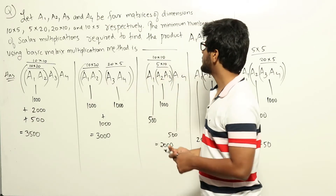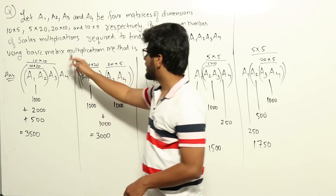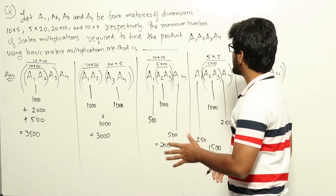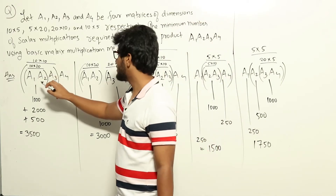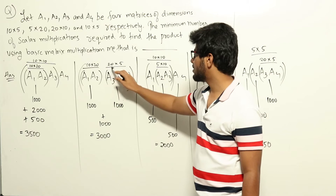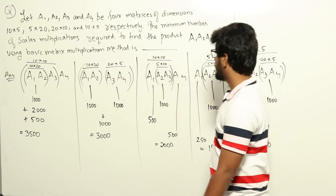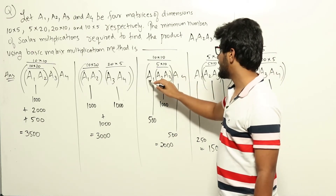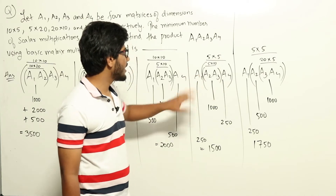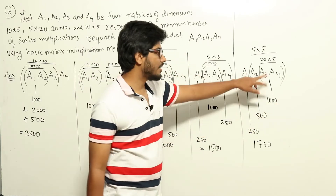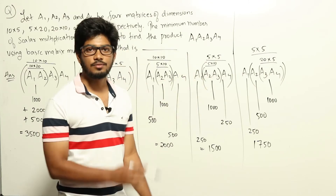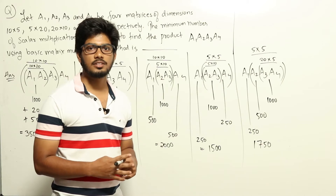Using this information, we will find which chain minimizes the number of scalar multiplications. There are five possible multiplication chains for four matrices. First: (A1·A2)·A3·A4. Second: (A1·A2)·(A3·A4). Third: A1·(A2·A3)·A4. Fourth: A1·((A2·A3)·A4). Fifth: A1·(A2·(A3·A4)). For each of these five possibilities, we will calculate the scalar multiplications and find the minimum.